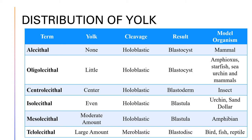The model organisms are as follows. For oligolecithal: amphioxus, starfish, sea urchin, and mammals. For centrolecithal: insects. For isolecithal: sea urchins and sandalars. For mesolecithal: amphibians. And for telolecithal: birds, fish, and reptiles.